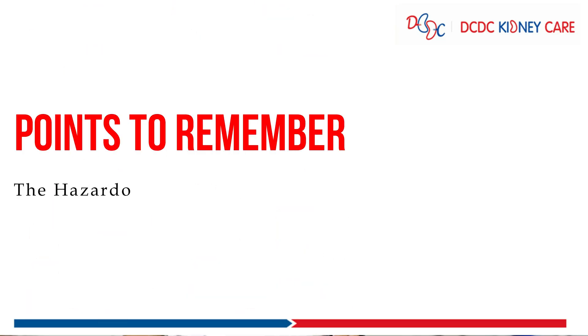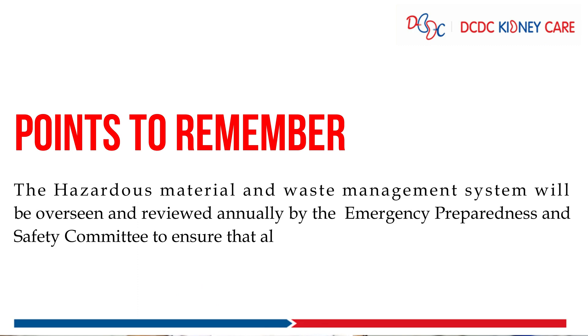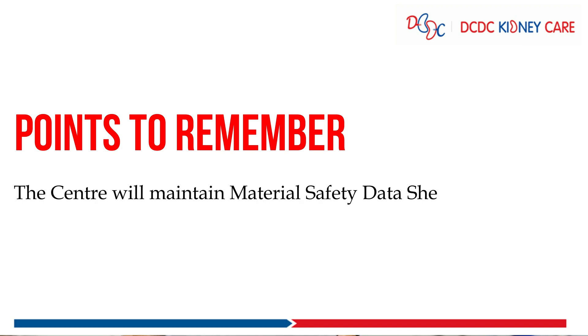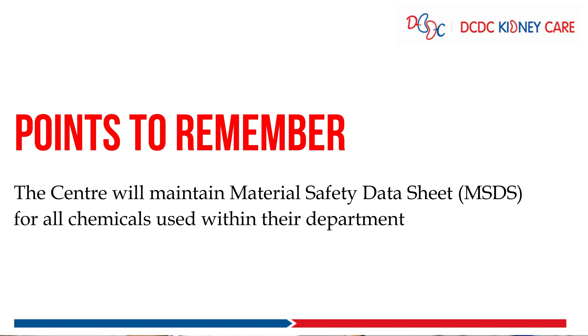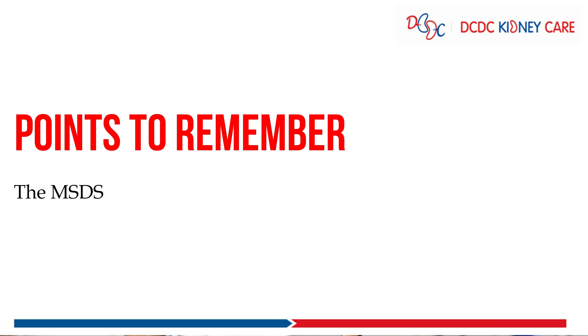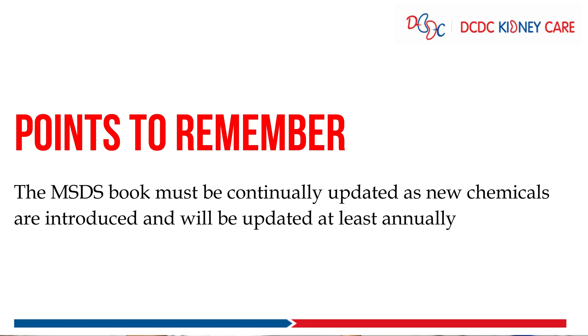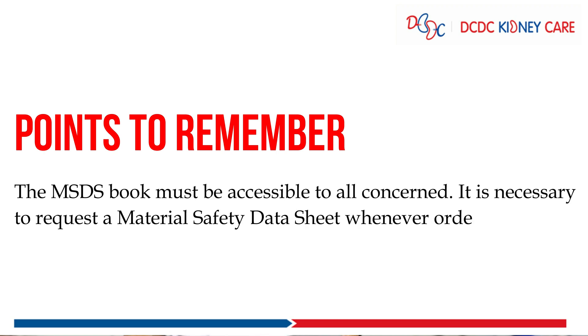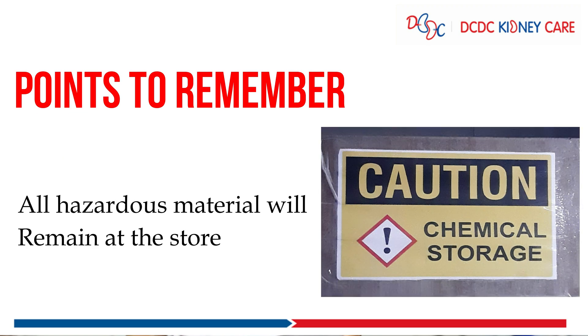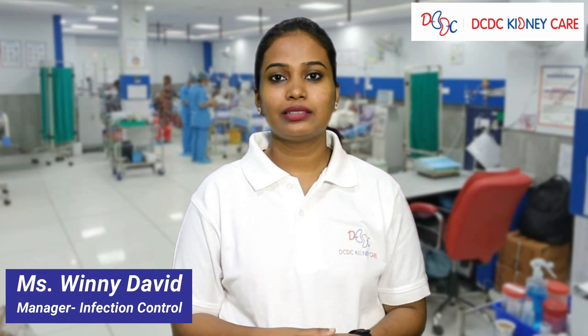Lastly, what points are to be remembered? First, the hazardous material and waste management system will be overseen and reviewed annually by the Emergency Preparedness and Safety Committee to ensure that all materials are handled in a safe manner. Second, the center will maintain material safety data sheets for all chemicals used within their department. Third, the MSDS book must be continually updated as new chemicals are introduced and will be updated at least annually. Fourth, the MSDS book must be accessible to all concerned, and it is necessary to request a material safety data sheet whenever ordering any chemical. And last, all hazardous material will remain at the store. If you have any doubt or query, please connect with the clinical department, as the clinical team is always present for you.